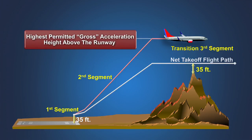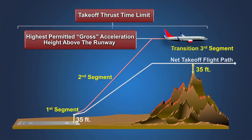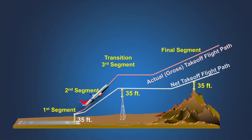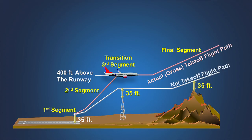When preparing the analysis, the performance engineer must consider the performance data and procedures for calculating the net takeoff flight path prescribed for each airplane type. The net flight path data for most airplanes allow a second segment climb to any height above 400 feet necessary to clear obstacles, up to a maximum height that permits cleanup and acceleration to VFTO speed to be completed within the time limitation on the use of takeoff thrust. For runways where obstacle clearance is not a limitation, the operator often establishes a standard acceleration height — for example, 1,000 feet above the runway elevation. On some airplane types, the second segment net takeoff flight path data terminates at a gross height of 400 feet above the runway, and the engineer must plan the transition segment obstacle clearance on the assumption that the pilot will level off and accelerate at that height.